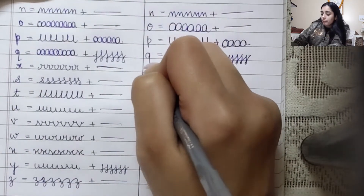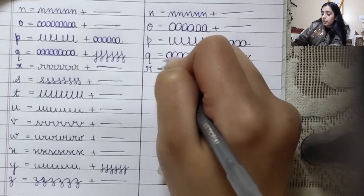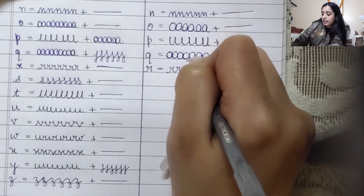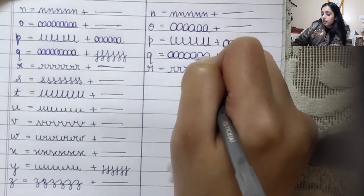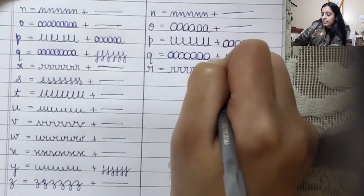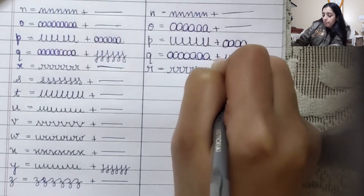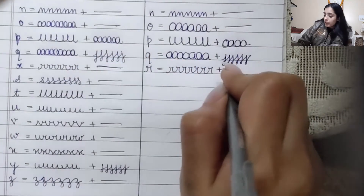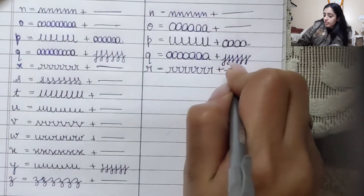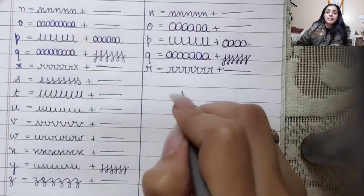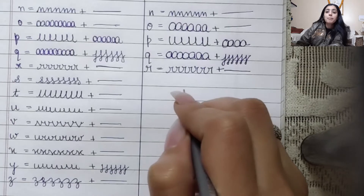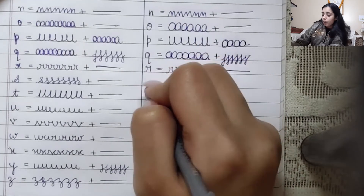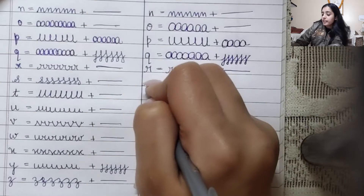Coming on to alphabet R — we'll write R in a spiral, joining it, and make sure it goes in a straight line. Coming on to alphabet S.